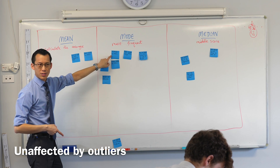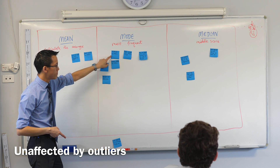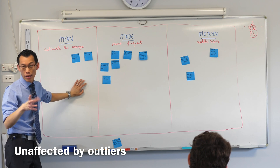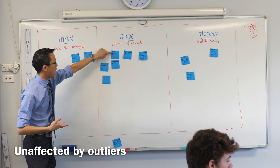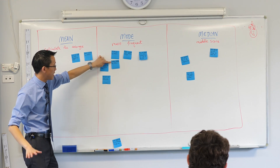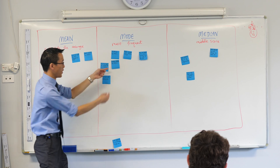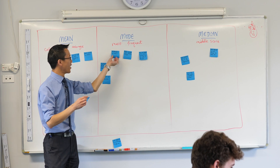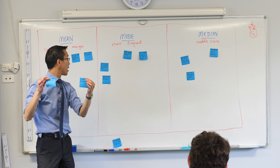Unaffected by outliers — now right next to each other I've got 'unaffected by outliers completely' and 'usually unaffected by outliers.' I'll give you a clue: these don't belong in the same category. Which one do you think belongs under mode? Do you think it's 'usually unaffected' or 'always unaffected'?